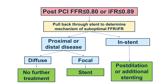If the FFR or IFR after the procedure is in the ischemic range, the next step is to pull back through the stent to find out why the index is suboptimal. There are several possibilities: the step-up may be within the stent, in which case post-dilation or additional stenting is done; or it can be proximal or distal. If focal, more stenting can be performed; if diffuse, it cannot be treated and is often left alone.